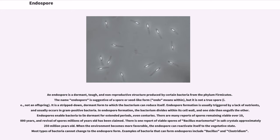It is a stripped-down, dormant form to which the bacterium can reduce itself. Endospore formation is usually triggered by a lack of nutrients, and usually occurs in gram-positive bacteria.